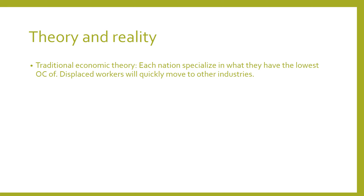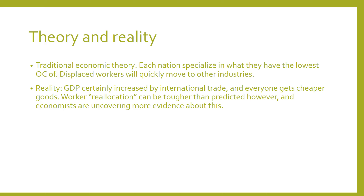So this is how it works in theory — each nation specializes in what they have the lowest opportunity cost in, and then any workers, say fishermen in France, would move on to other industries quickly and costlessly. However, in reality, and this is something economists have come to discover only in recent decades, while GDP can certainly be increased by international trade and everyone gets cheaper goods, the reallocation of workers to other industries can actually be pretty tough. So this takes us back to our original question: is international trade good? Throughout this mini-unit we'll be uncovering more examples of this — this is our first taste of the economic theory and how that might compare to reality.